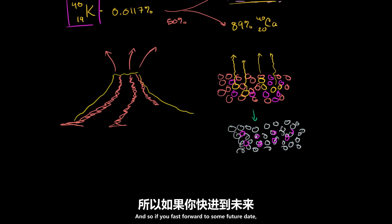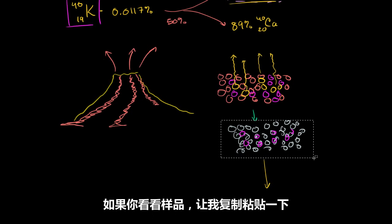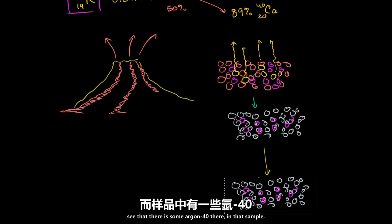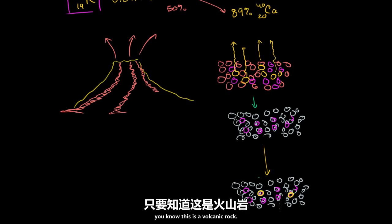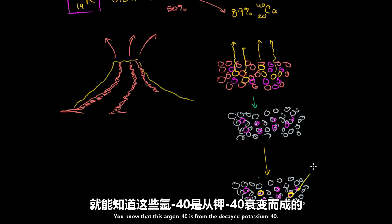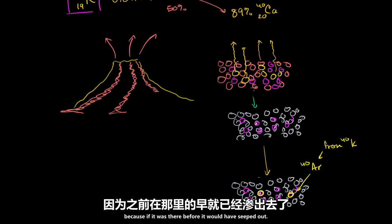So right when the lava actually becomes solid, you shouldn't have any argon-40. And so if you fast forward to some future date and you look at this sample and you see that there is some argon-40 there, and you know this is volcanic rock, you know that it was due to some previous volcanic event — you know that this argon-40 is from decayed potassium-40, and it has decayed since that volcanic event. Because if it was there before, it would have seeped out.